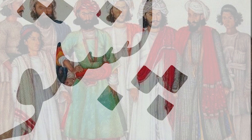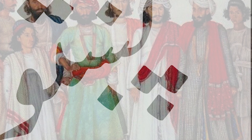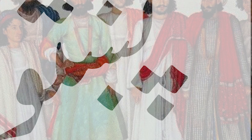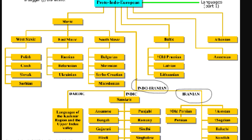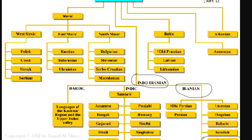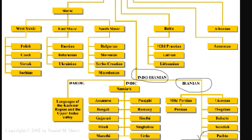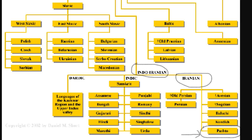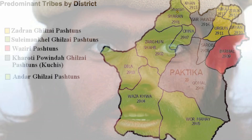Regarding their language, Pashto is part of the Eastern Iranian language family and broadly classified within the Indo-European language family. It is spoken across Northwest Pakistan, South and Eastern Afghanistan, and also in some pockets of Eastern Iran near the Afghan border, with different dialects and branches.